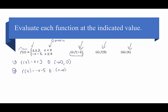Our first example is f of negative 2. We have to decide where negative 2 falls: is it in the interval from negative infinity to 0, or from 0 to infinity? Negative 2 is smaller than 0, so we plug it into the top piece only. That gives us negative 2 plus 3, which equals positive 1. So f of negative 2 is equal to 1.